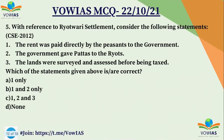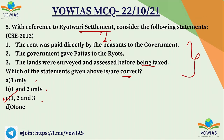Now let's look at the fifth question, which is a previous year question. With reference to the Ryotwari system, consider the following statements. First one: the rent was paid directly by the peasants to the government. Second one: the government gave patas to the ryots. Third one: the land was surveyed and assessed before being taxed. The options are: A) 1 only, B) 1 and 2 only, C) 1, 2 and 3, D) none of the above. The correct option is C — all three are correct. In the Ryotwari system, rent was directly paid by peasants to the government with no intermediary, the government gave patas to the ryots meaning land rights were given directly to the farmers, and lands were surveyed and assessed before being taxed.